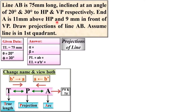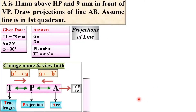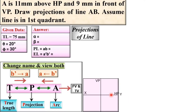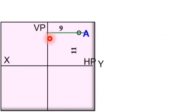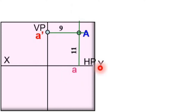This is a very important method for solving problems from the projection of lines. First, locate the projection of point A, which is given as 11 mm above HP and 9 mm in front of VP. Draw the reference line XY. A is 11 mm above HP and 9 mm in front of VP, so this gives us the location of point A. The front view is projected onto the vertical plane and is denoted A'. Viewing from the top gives the top view, denoted A, on the horizontal plane.